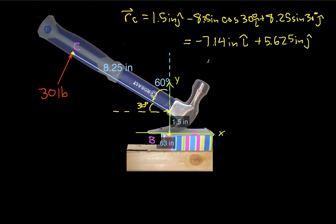Okay, RB, that is the vector from point B to our origin, is just 0.63 inches i-hat.